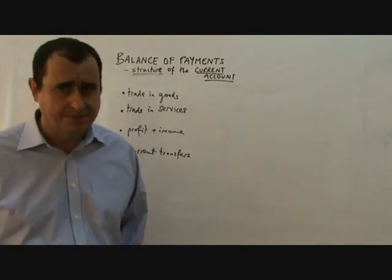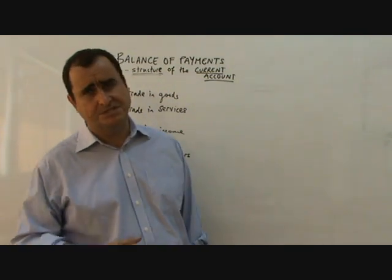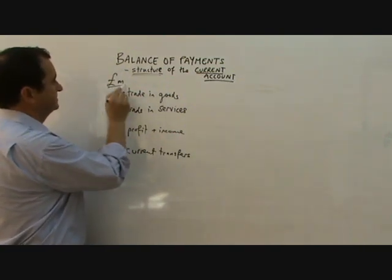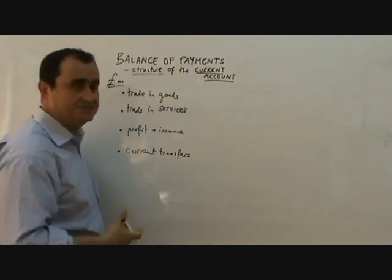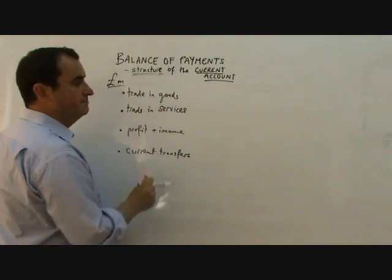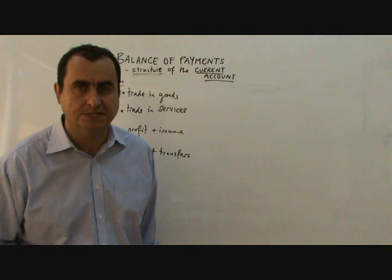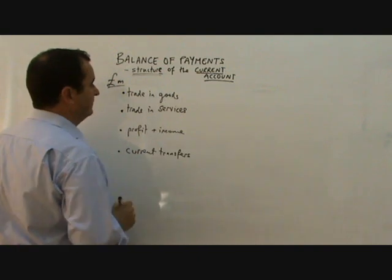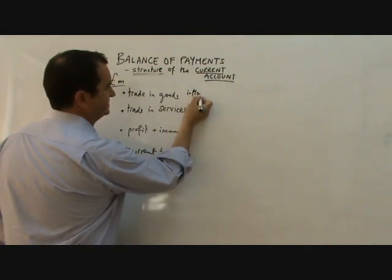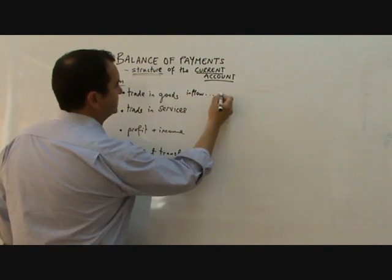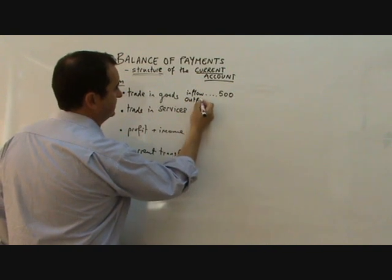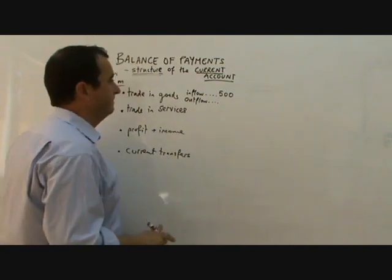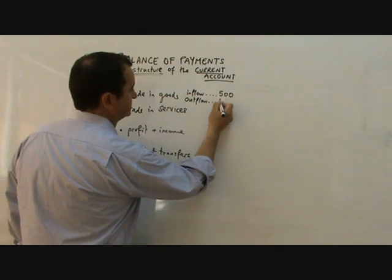I'm going to make these numbers up and keep them simple for the purpose of our example. We're measuring this in millions of pounds. Trade in goods will have a positive number representing money Britain has earned — money from selling exports of goods like Scotch whisky leaving Britain and going all over the world. So this would have an inflow; let's say the inflow for trading goods is 500 million. But there will also be an outflow as we buy goods and spend British money in foreign economies. Let's say that's 1,300.